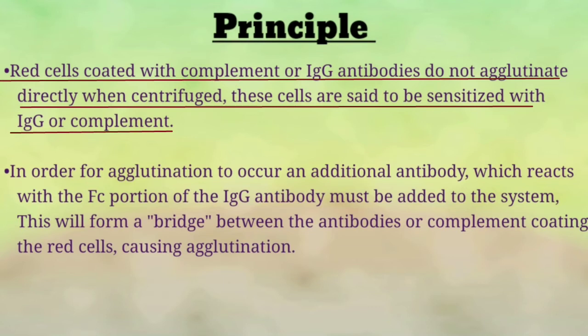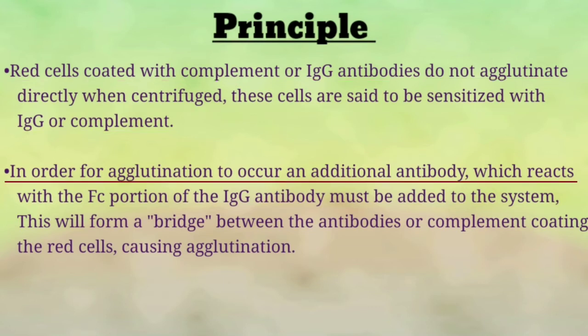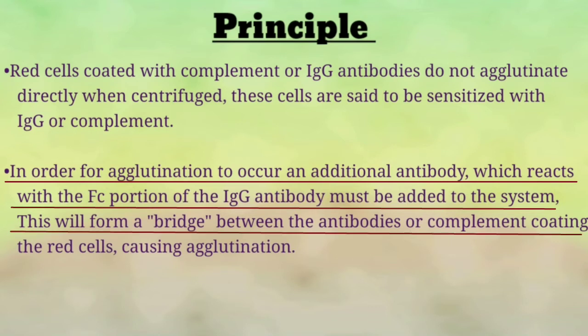RBCs which have IgG antibodies present do not agglutinate directly — we call this 'sensitized with IgG or complement.' In order for agglutination to occur, an additional antibody which reacts with the Fc portion of the IgG antibody must be added to the system. This forms a bridge between the antibodies or complement coating the red cell, causing agglutination.